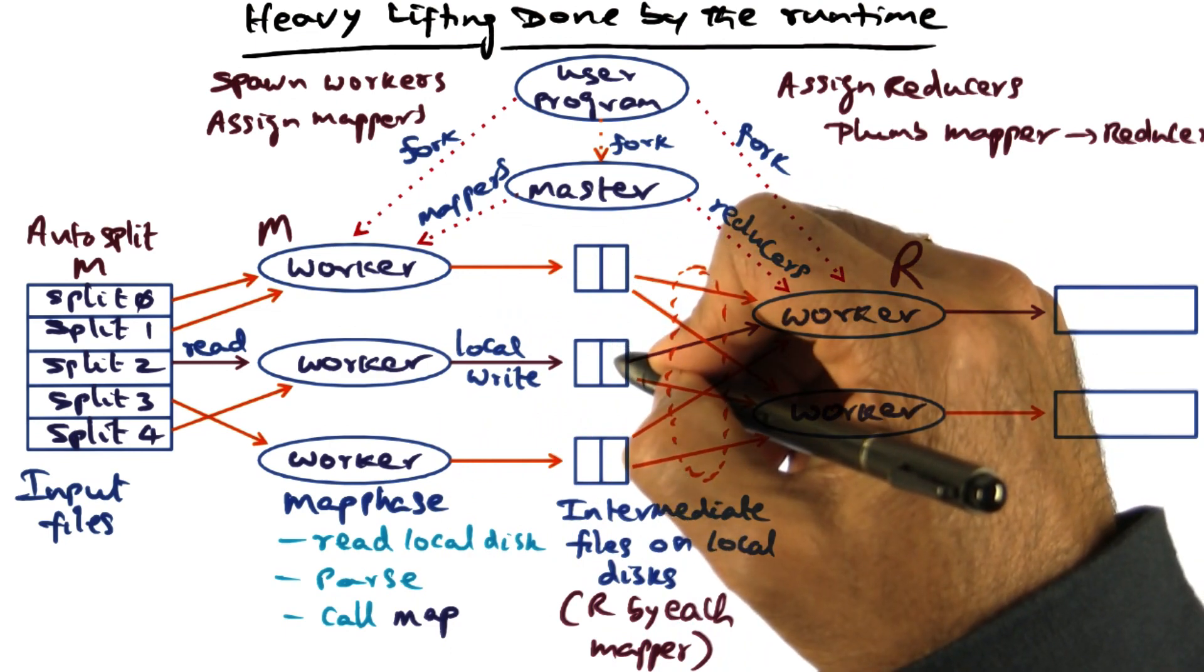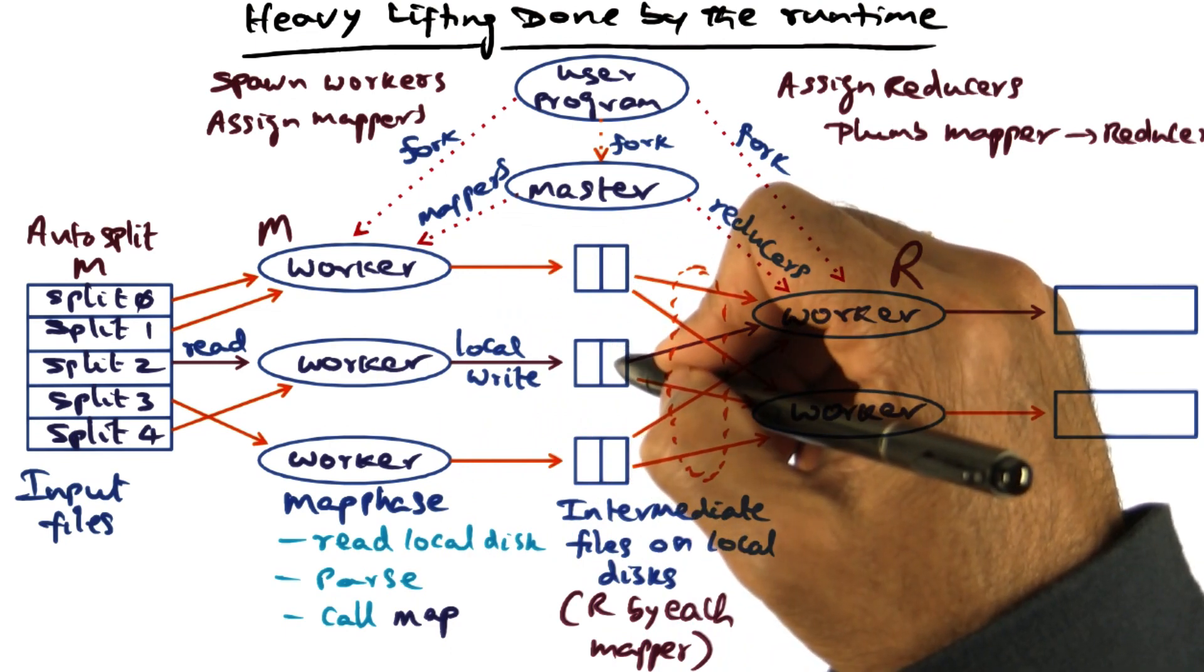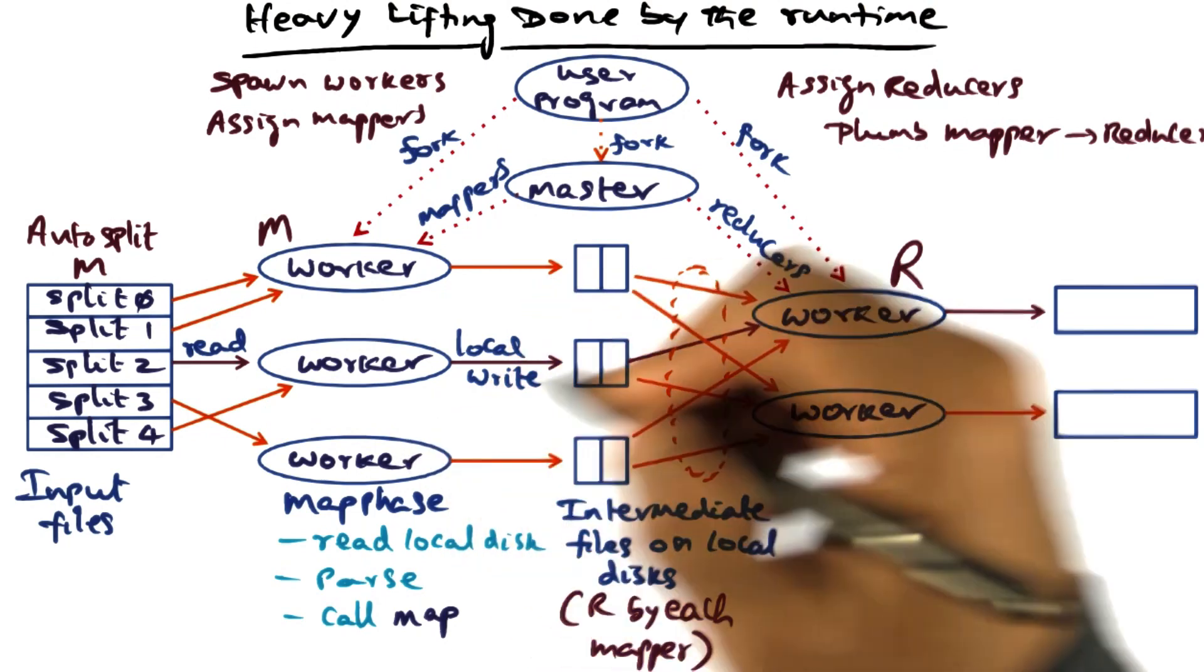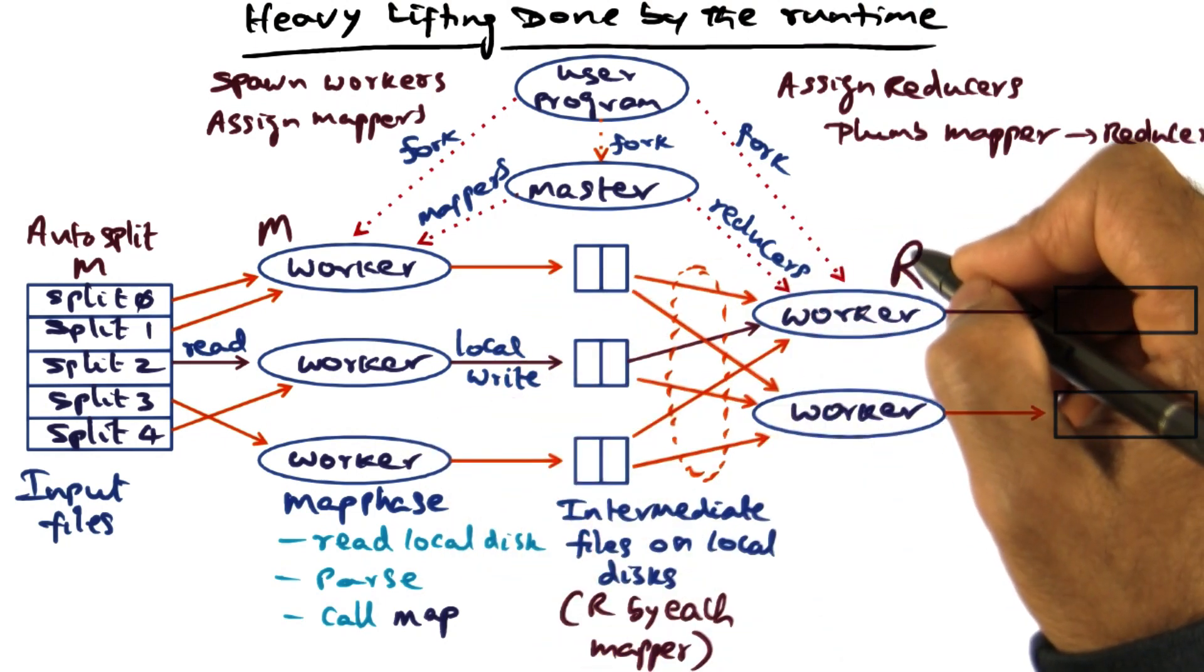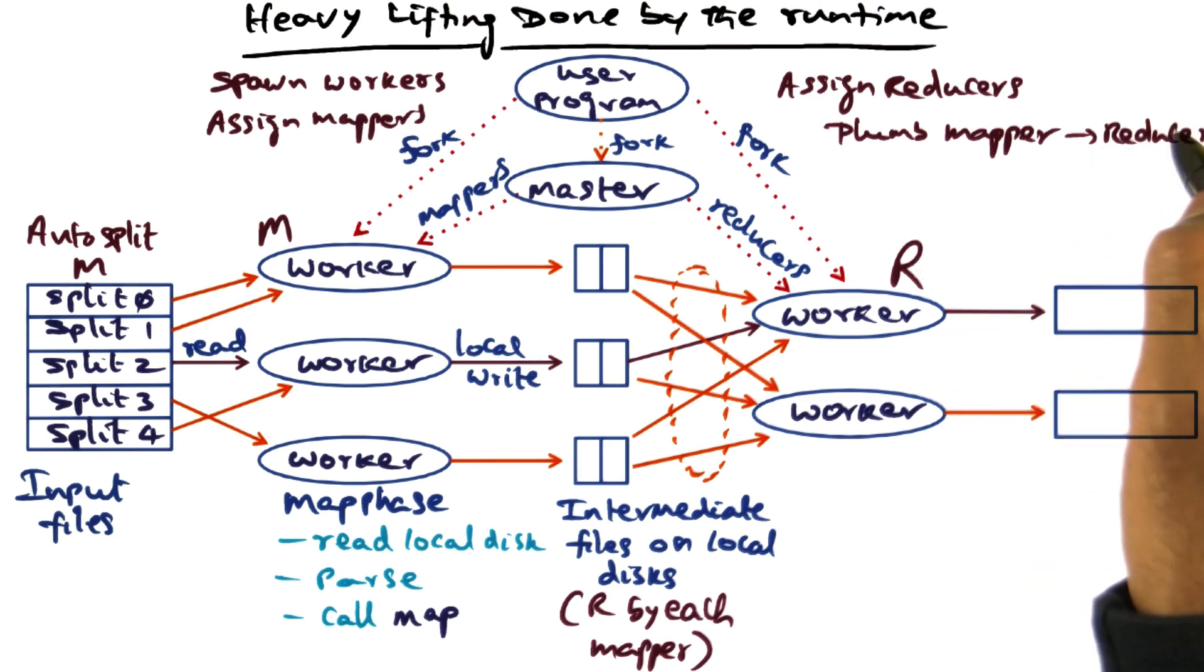Similarly, this worker is going to write to its local disk the intermediate files and so on. Because the application developer has specified that there are R splits in the reducers,